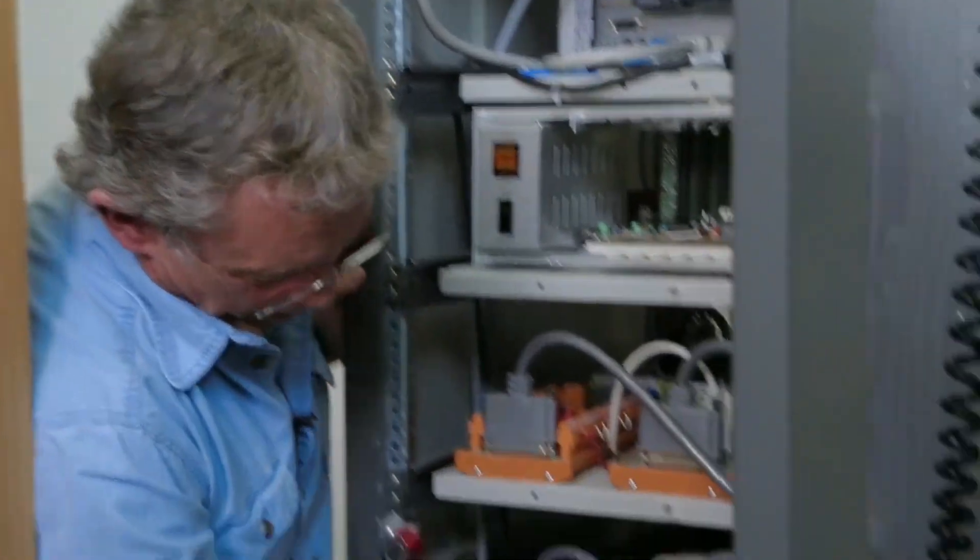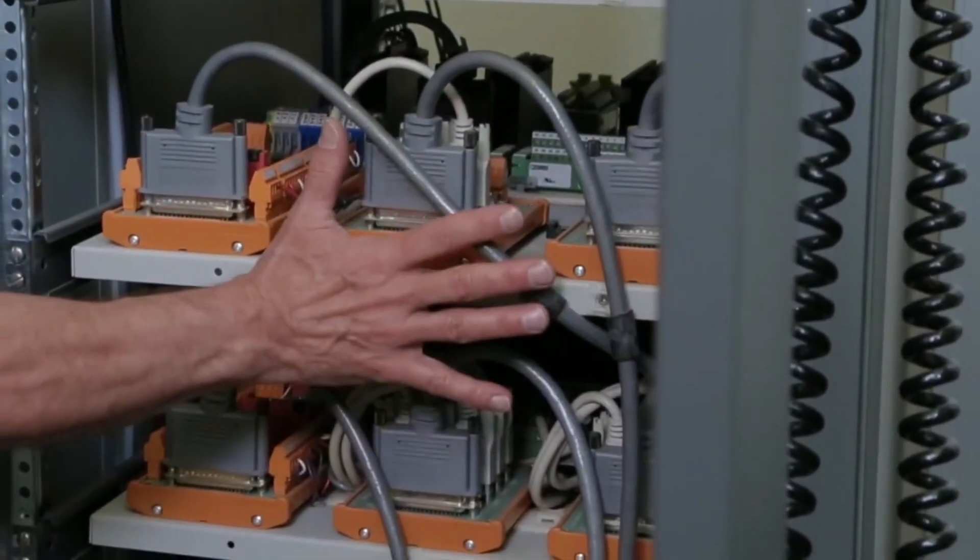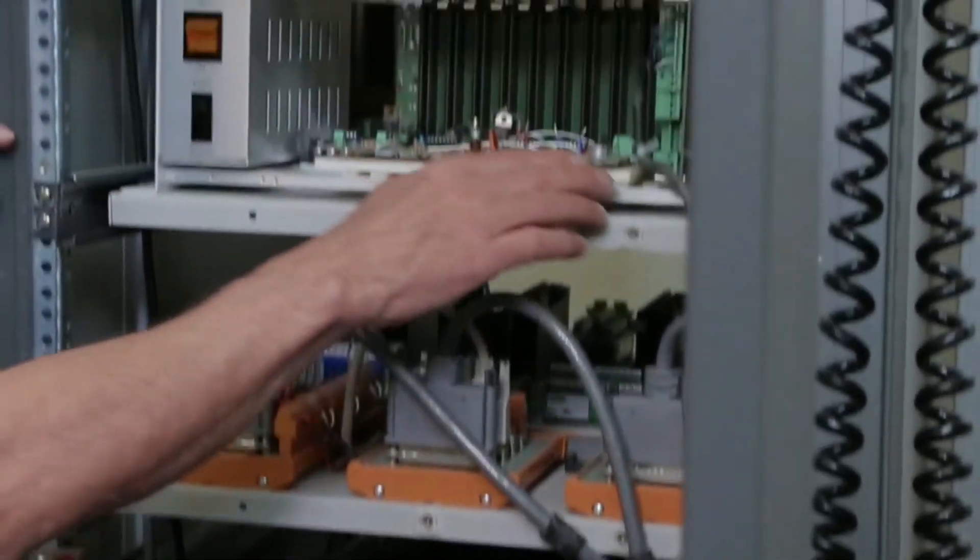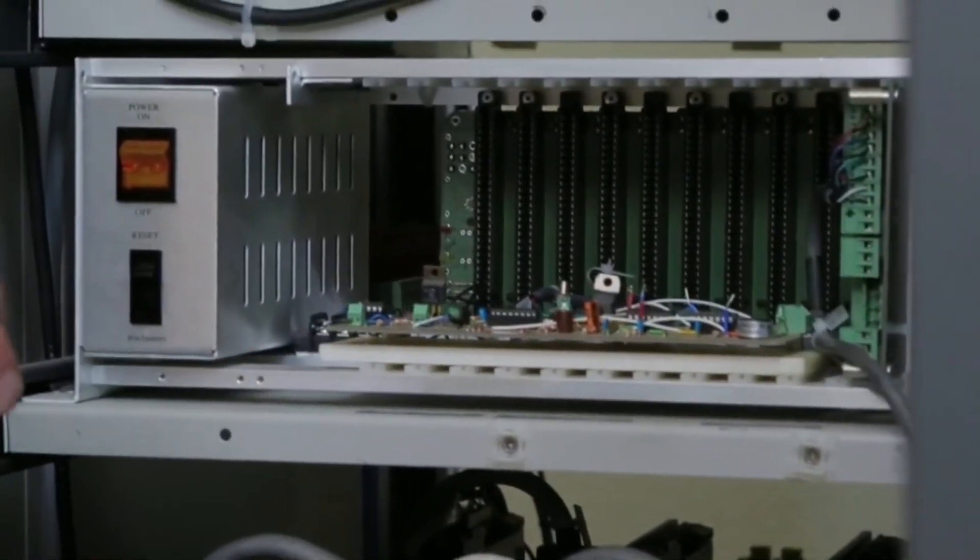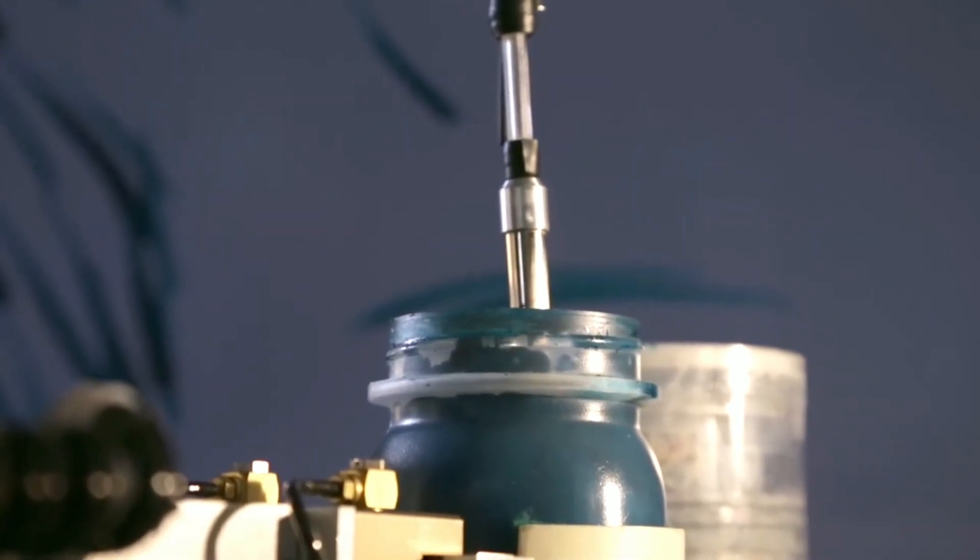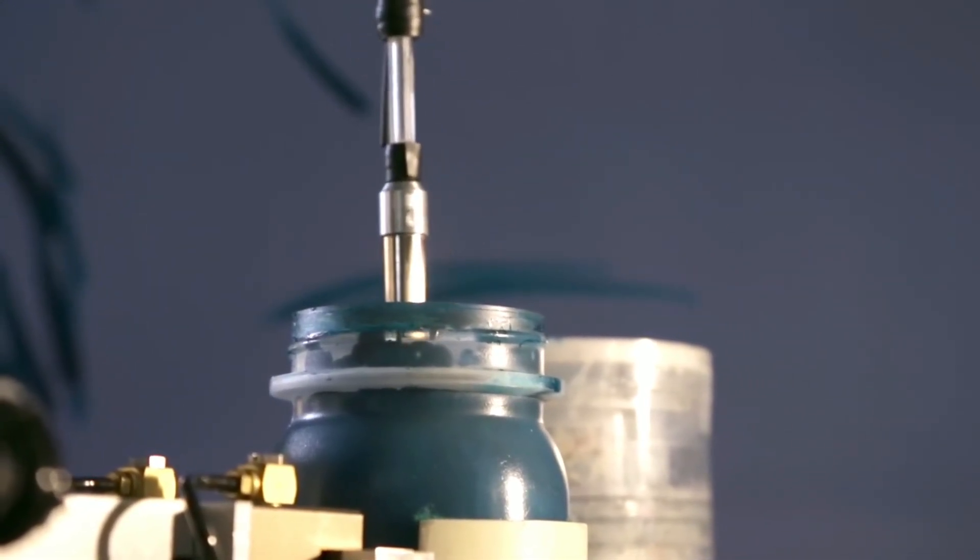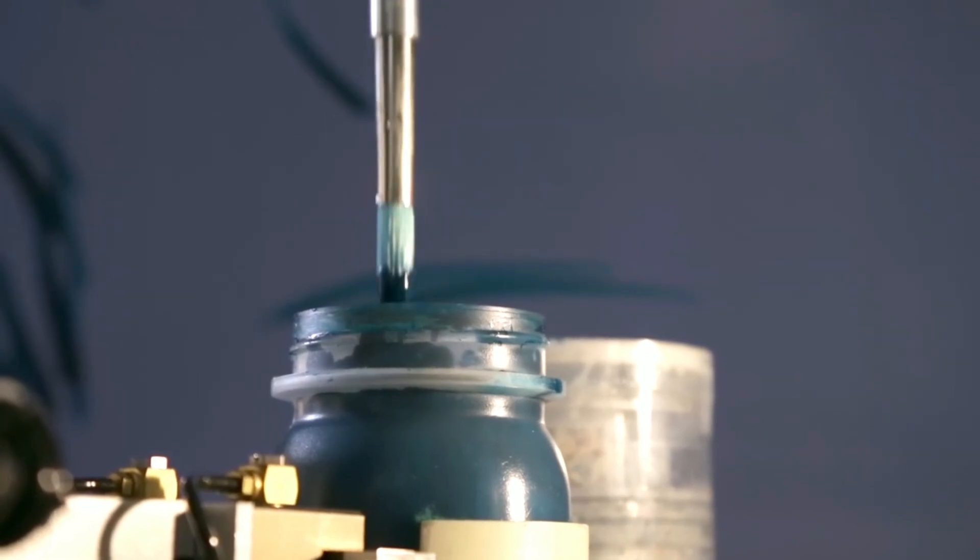So these are the power amps that run the X, Y, and Z. These are all the controls for the motors. This is a circuit that I made that detects the level of the paint. As you paint, you're using up the paint, so the paint level goes down. But if you want to have seven millimeters on the brush, you need to know where that level is.